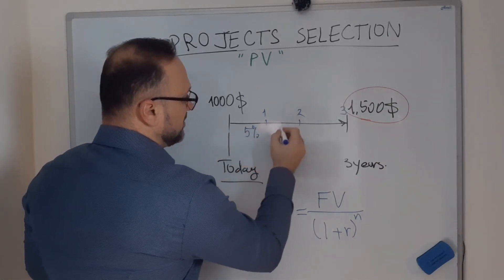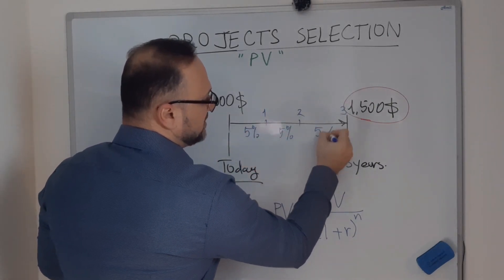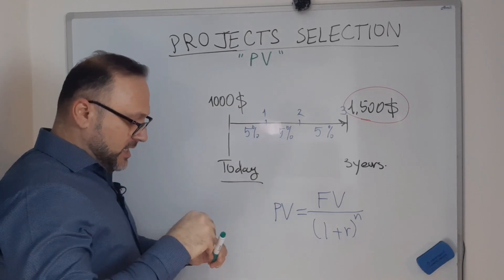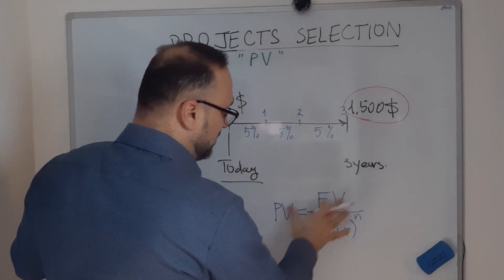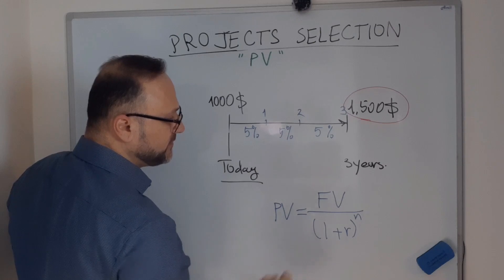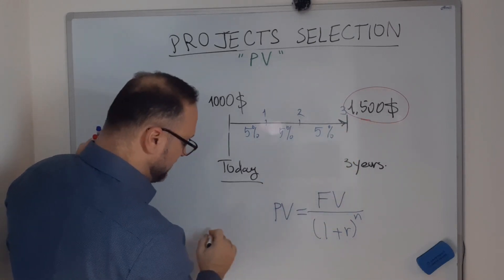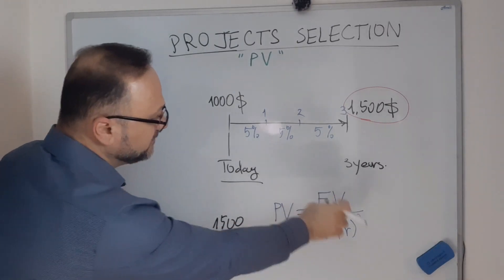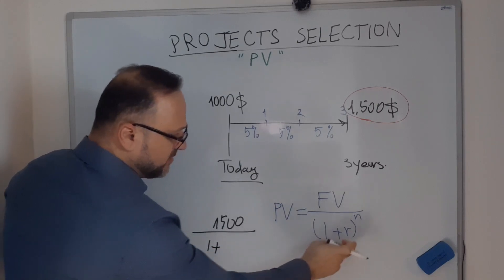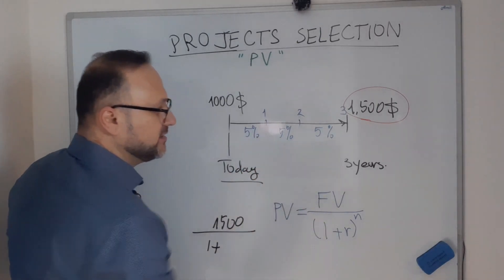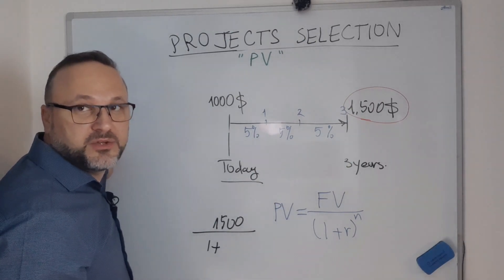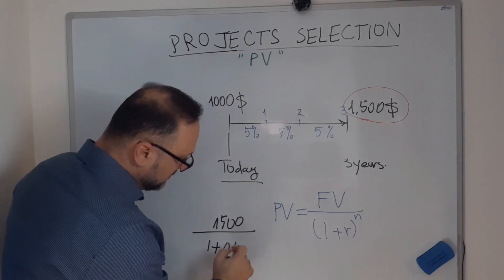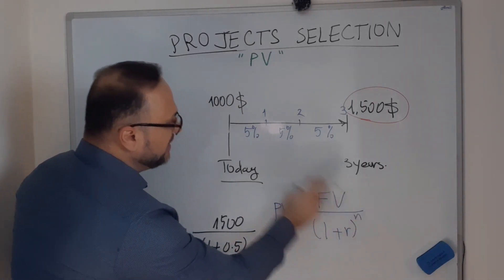5% per year, the ratio will be decreased. So with a simple math, if I will consider that my future value is $1,500, 1 plus r - the ratio is 5%, which means 0.05.